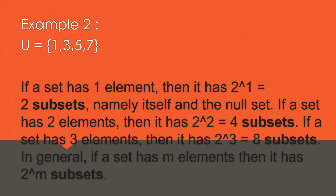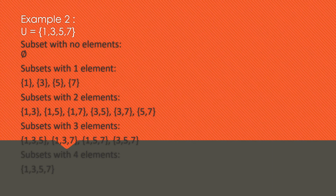Example number two: U = {1, 3, 5, 7}. Listing all subsets: the null set (no elements); subsets with one element: {1}, {3}, {5}, {7}; subsets with two elements: {1,3}, {1,5}, {1,7}, {3,5}, {3,7}, {5,7}; subsets with three elements: {1,3,5}, {1,3,7}, {1,5,7}, {3,5,7}.